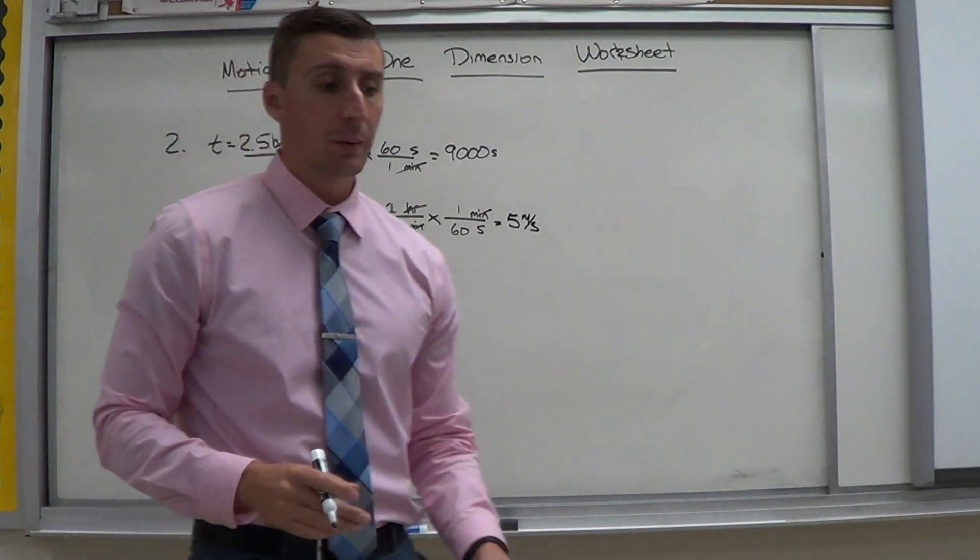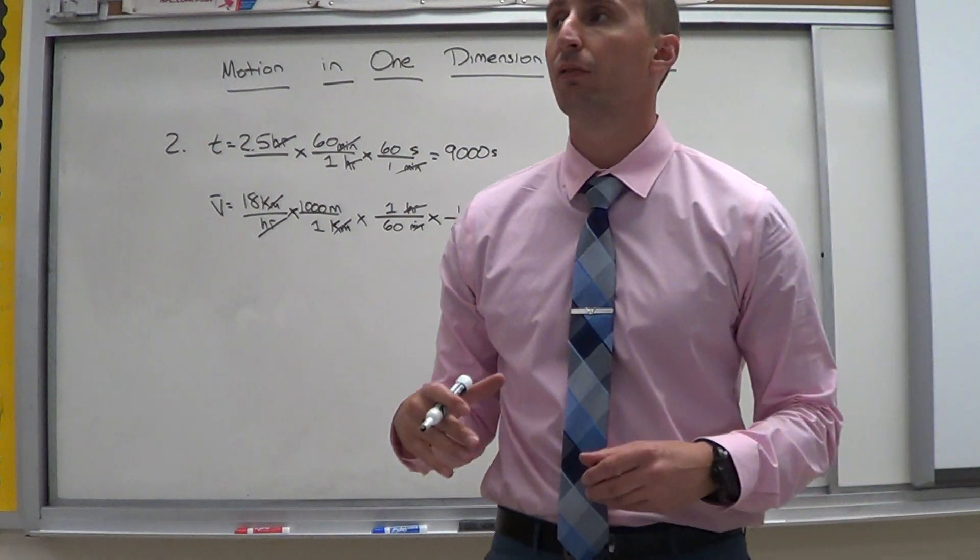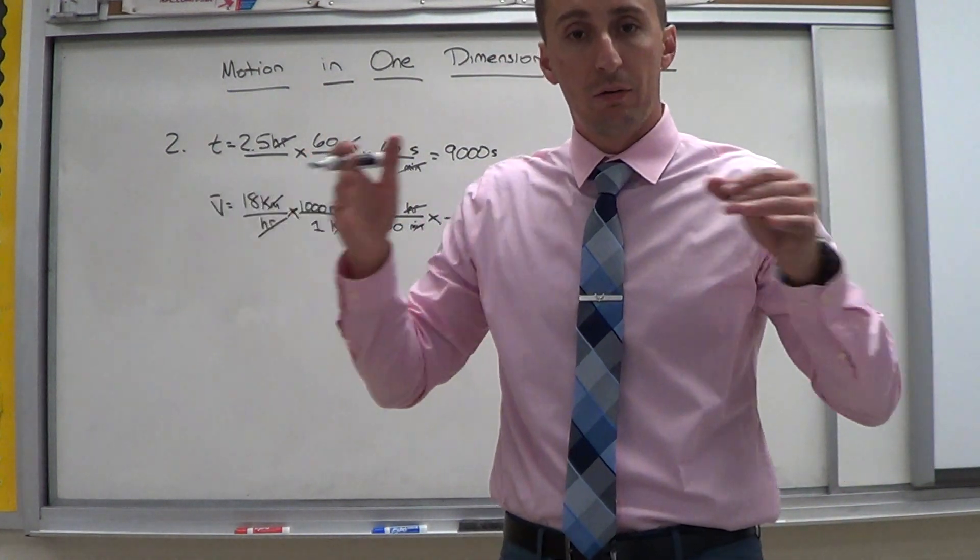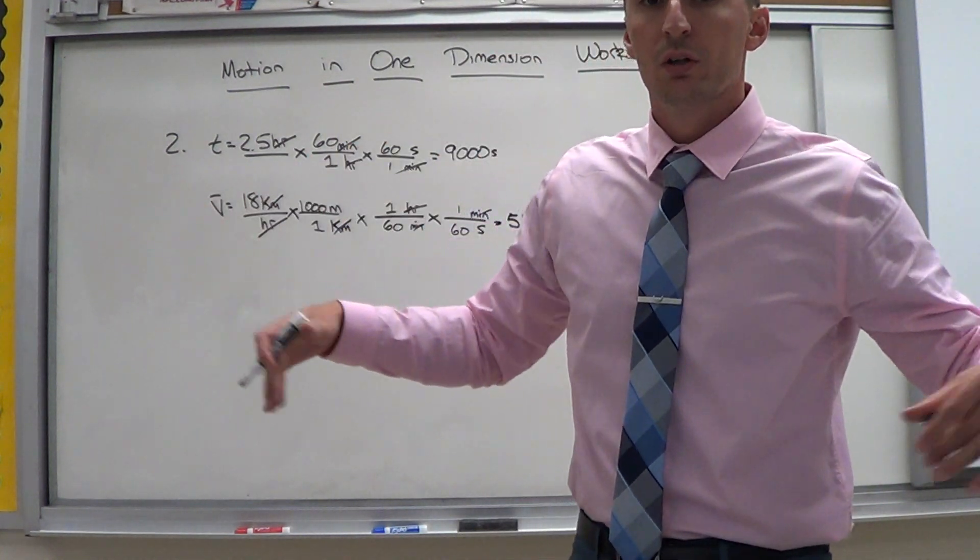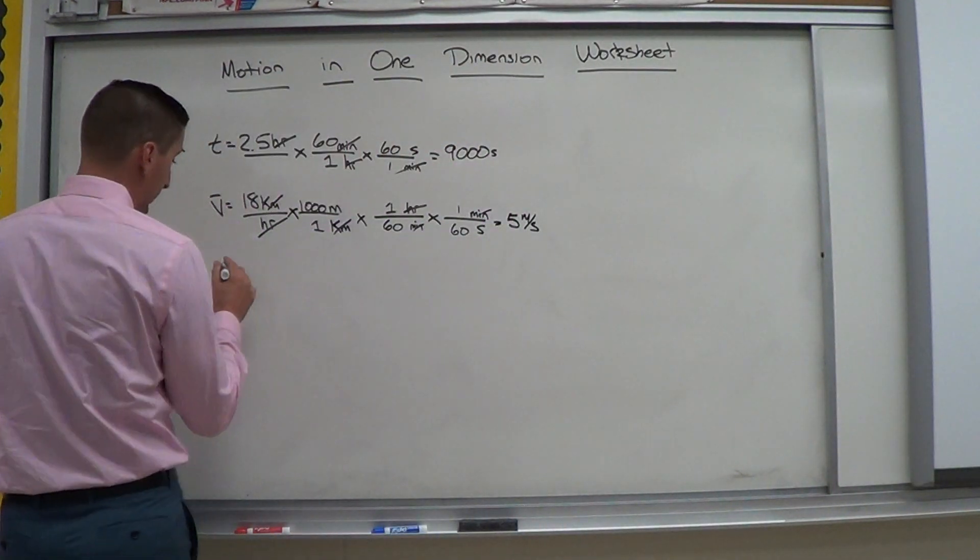Alright? Now, when I read the problem, it says how far. Alright? When I think about that, how far, I'm looking for length. How far the cyclist has traveled. So the variable that represents length is delta x. So I'm looking for delta x here.